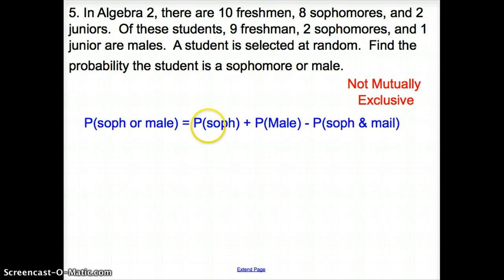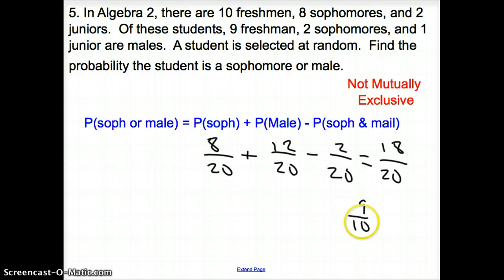Let's see if we can put this together. So, how many sophomores do we have? We have 8 sophomores in the whole class. And how many are in the total class? We have 20. So, plus how many males do we have? We have 12 males, 12 out of 20. Now, how many sophomores are males? We have 2 sophomores that are males. So, we go 2 over 20. And so, now we add this up. It is 18 twentieths. For our probability, we simplify to get 9 tenths.